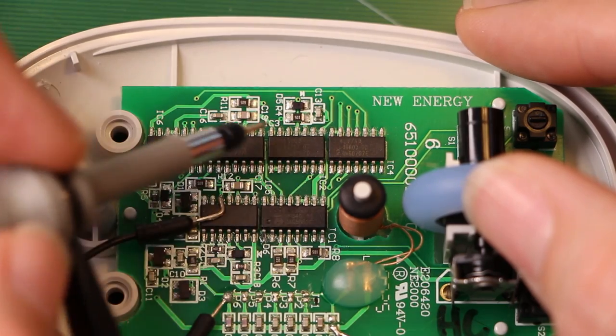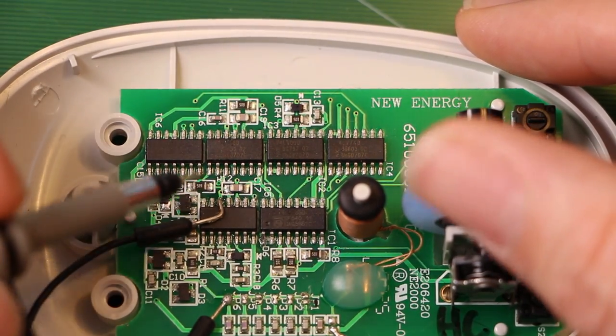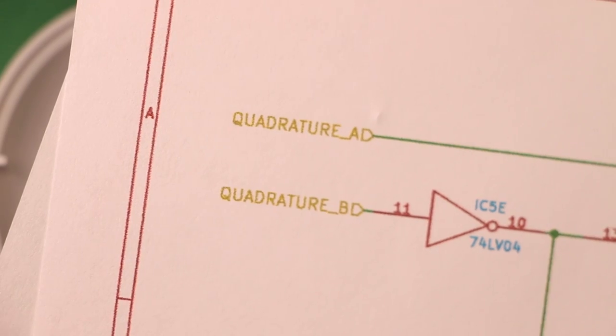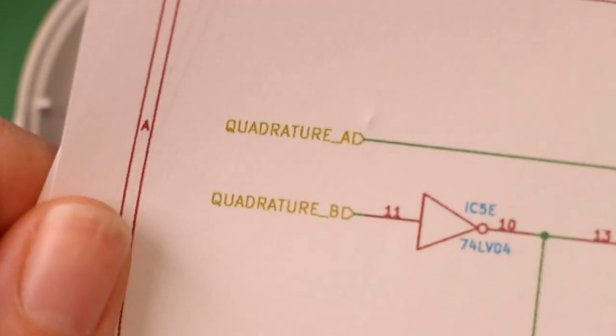This chip is for scrolling up and this chip is for scrolling down. To see why this is all necessary let's take a look at the quadrature signals that come out of the mouse wheel encoder.